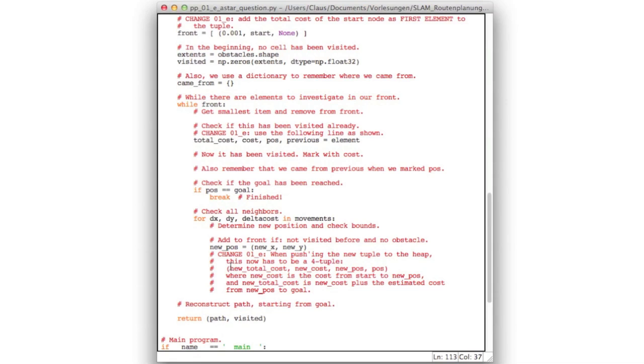So you will have to provide those four elements which you push on the heap, instead of three, which you had previously. So compute the new cost as usual,